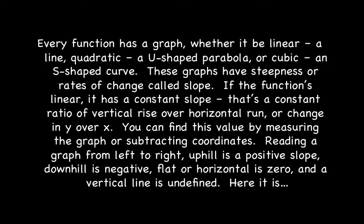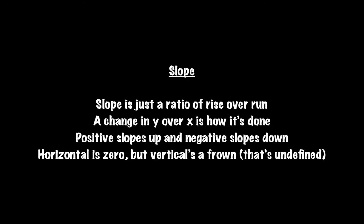These graphs have steepness or rates of change called slope. If the function is linear, it has a constant slope — a constant ratio of vertical rise over horizontal run, or change in y over x. You can find this value by measuring the graph or subtracting coordinates. Reading a graph from left to right: uphill is a positive slope, downhill is negative, flatter horizontal is zero, and a vertical line is undefined. Slope is this ratio of rise over run — positive slopes up, negative slopes down, horizontal is zero, but verticals are undefined.